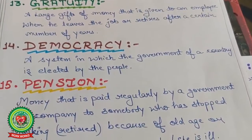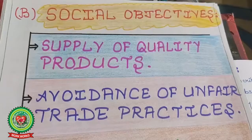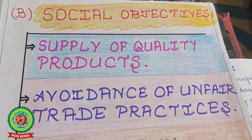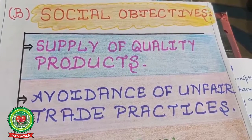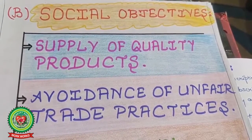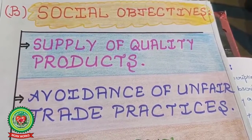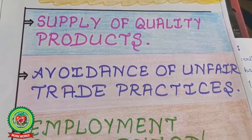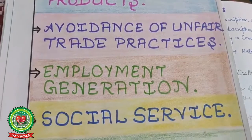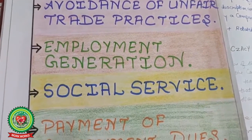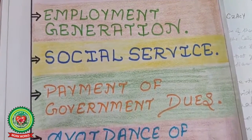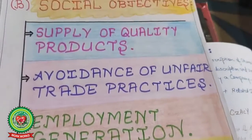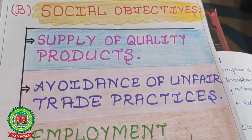The second objective of business is the social objective — meaning business responsibility toward society, because business is using the resources of society. Points under social objective include: supply of quality products, avoidance of unfair trade practices, employment generation, social service, payment of government dues, and avoidance of pollution.